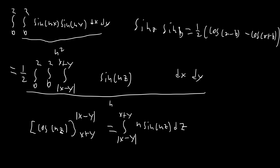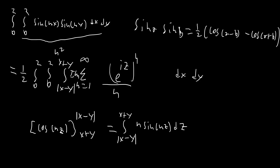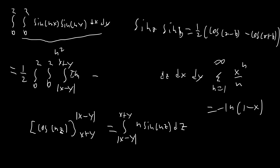We had sum from n equals 1 to infinity on the outside, and we're going to bring that sum inside the integral. We're going to have this 1/n factor, and then convert sine of nz to e^{inz}. Because the sum from n equals 1 to infinity of x^n over n equals negative ln(1 minus x), this is going to become negative natural log of 1 minus e^{iz}. We're taking the imaginary part of that.